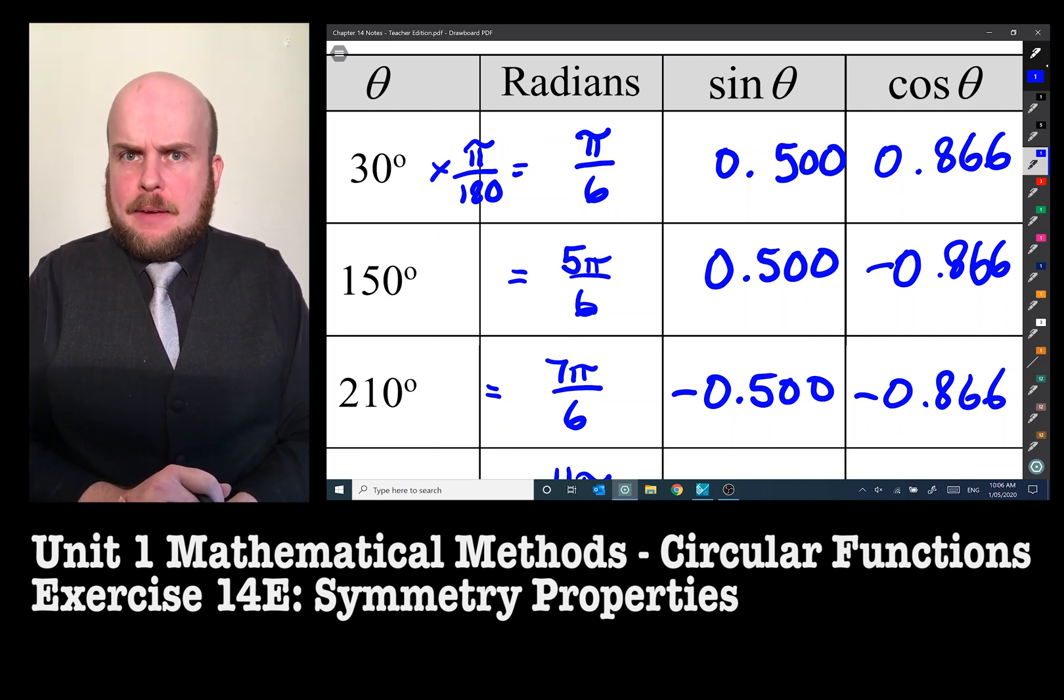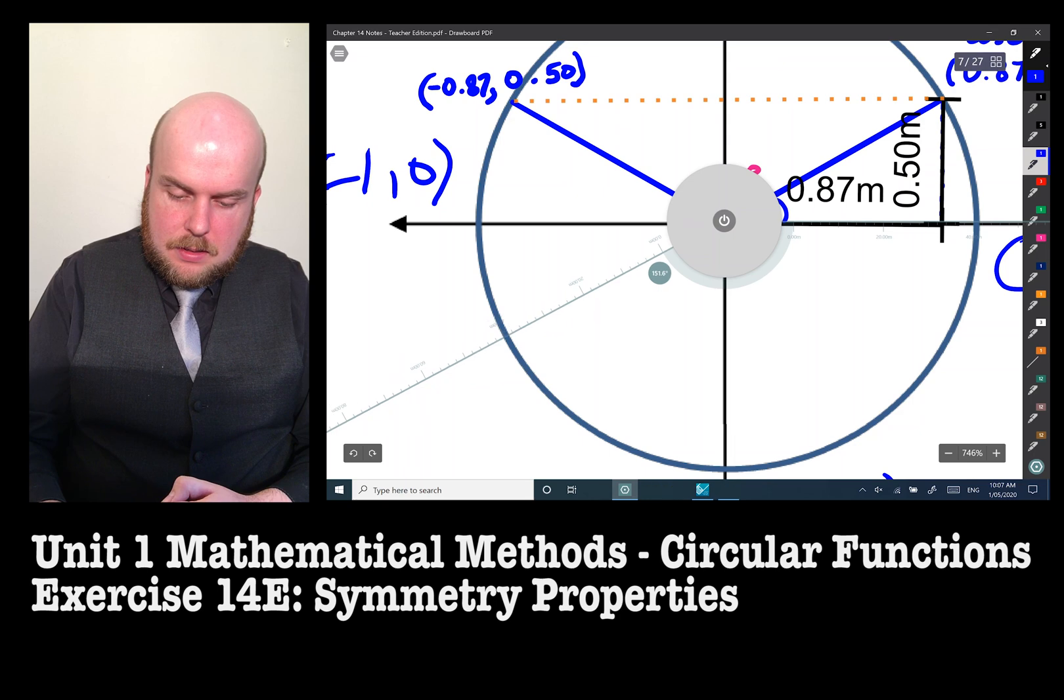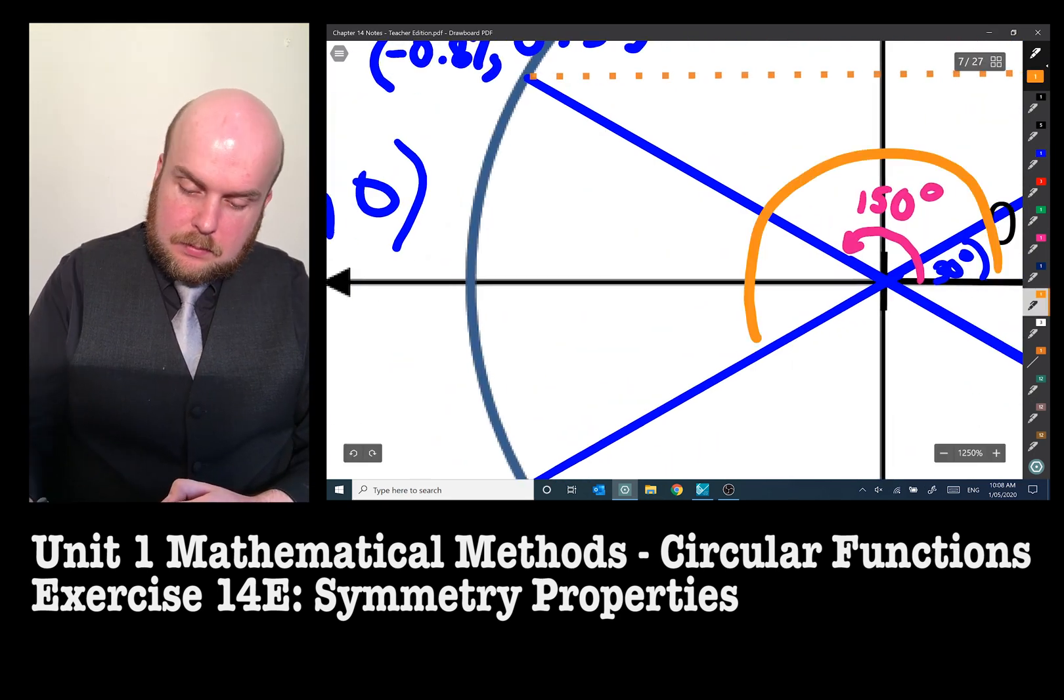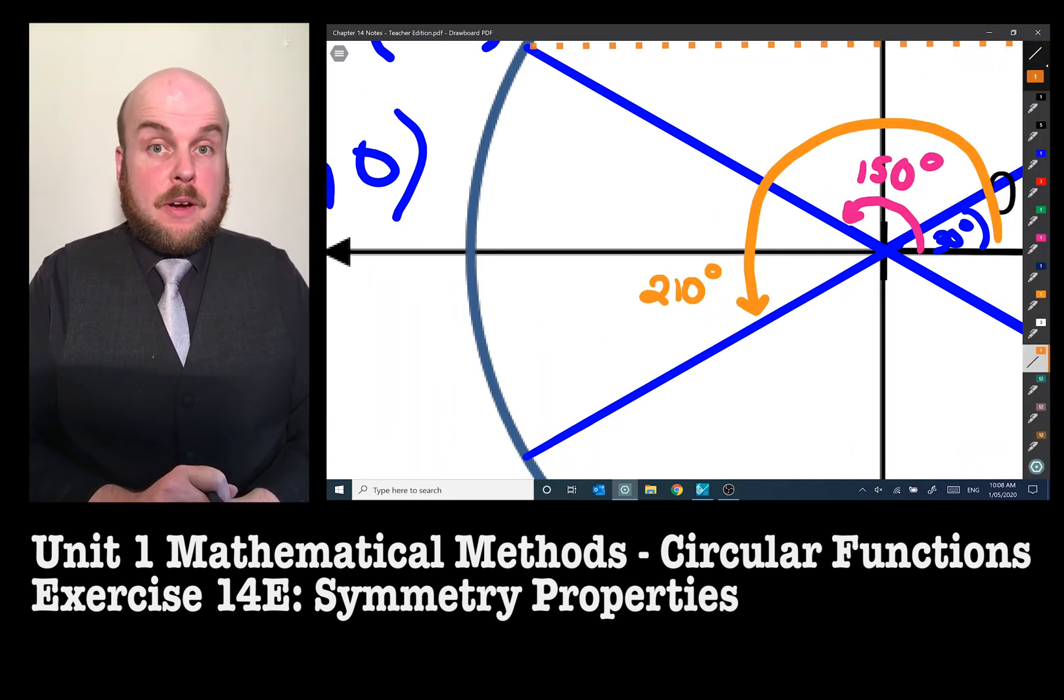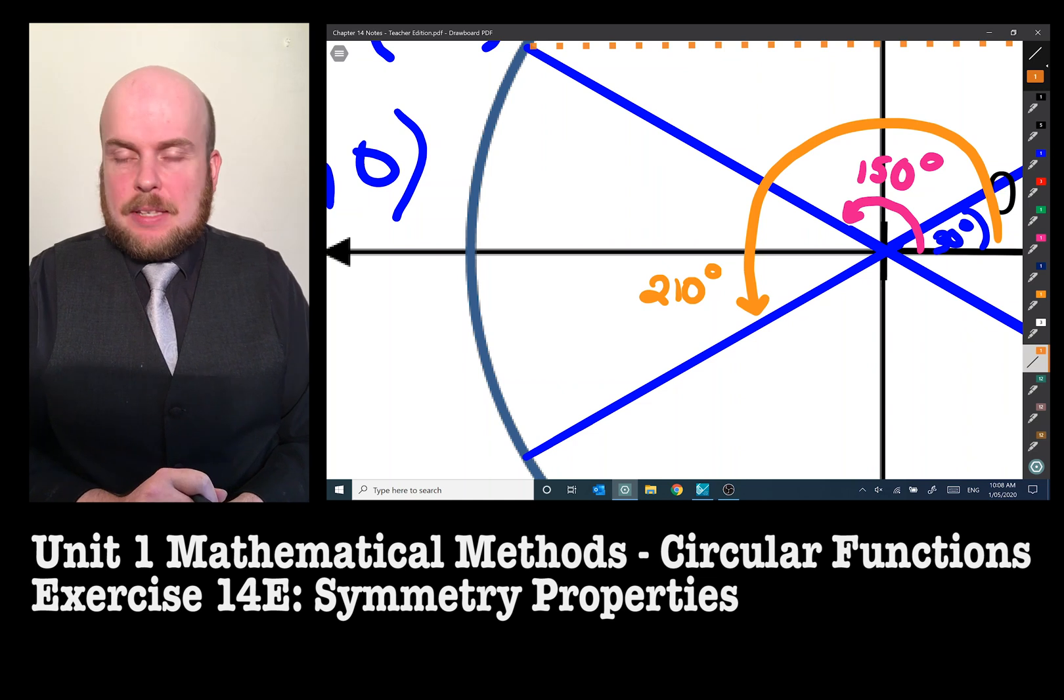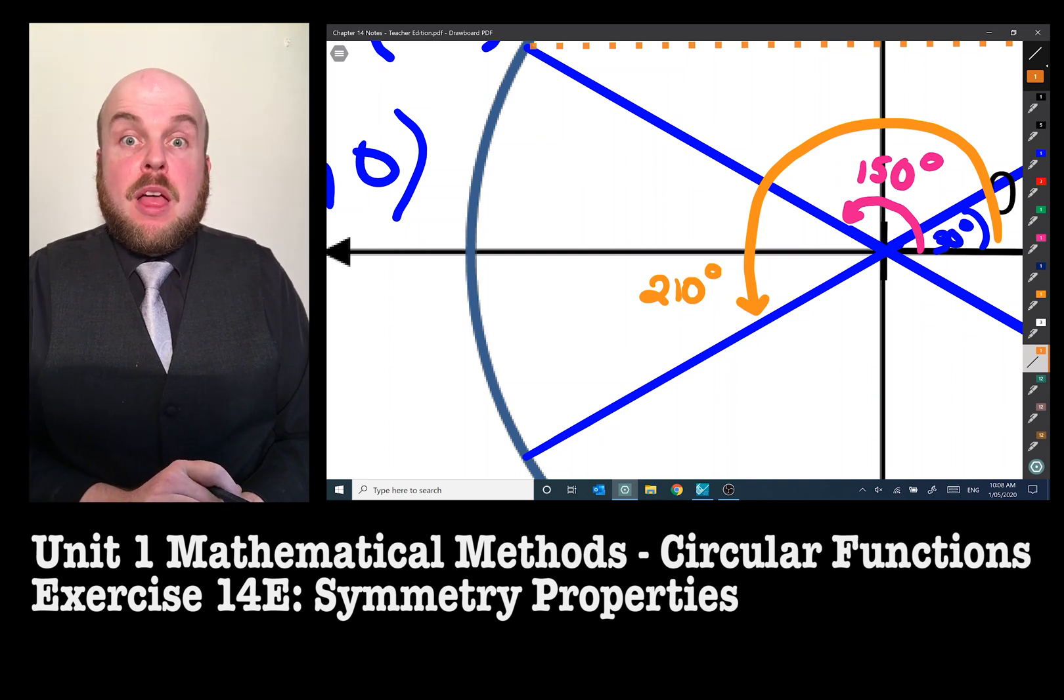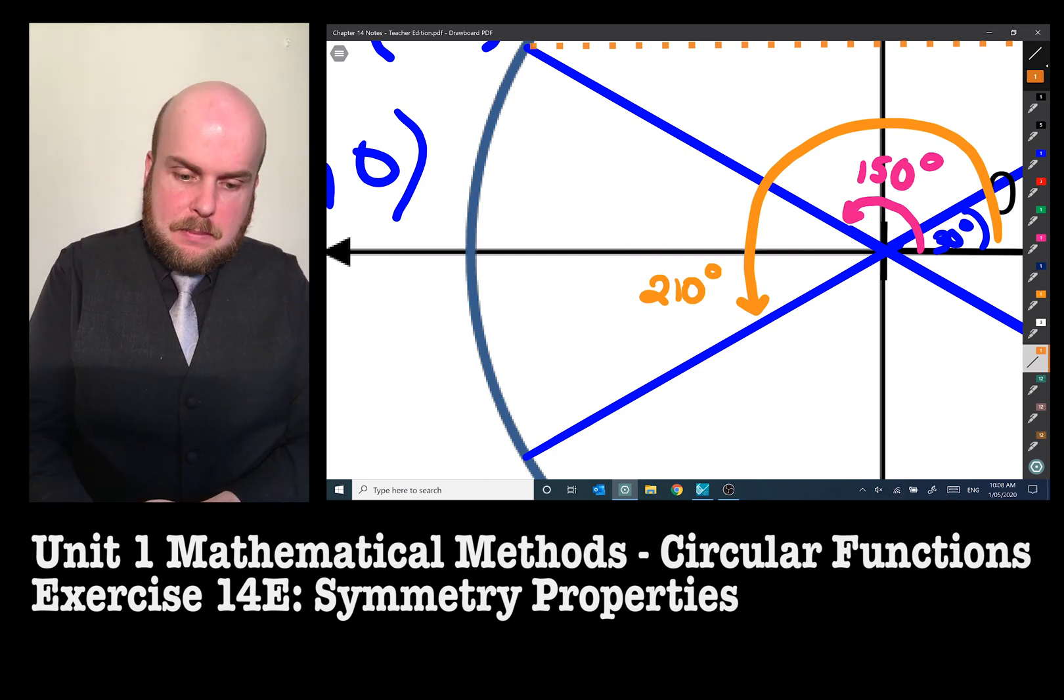Can we do the same for 210 and 330? So I've drawn this line at 210 degrees, and again we cannot use a right angle triangle necessarily to determine what the trigonometric values are for this coordinates, but we can use symmetry properties.